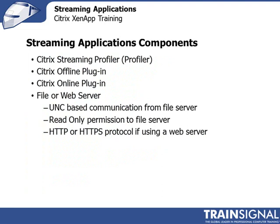Streaming application components — these are the different components you'll need for application streaming. The streaming profiler, otherwise known as the profiler, is what creates that package, and we'll go through that in a moment. You'll need the offline plugin if you want to run applications cached locally when not connected to the network. When you are connected, you'll need the online plugin. If you're delivering these applications through a file or web server, you'll need UNC-based communication with read-only access.